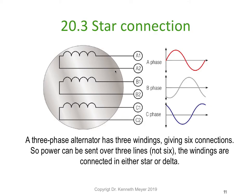Now, star connection properly. You can see the star connection: winding A, winding B, winding C, generating Phase A, then 120 degrees later Phase B, then another 120 degrees — or 240 degrees total — Phase C. We have six winding endings: a start and a finish for each of the three windings. A three-phase alternator has three windings giving six connections, and power can be sent over three lines, not six, by connecting into star or delta.